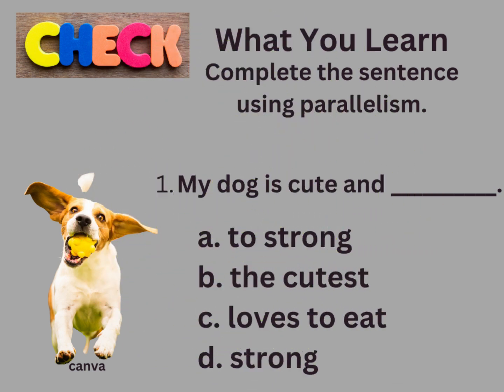Let's check what you learned from today's lesson on parallelism in sentences. Choose the answer that achieves parallelism. A: To strong. B: The cutest. C: Loves to eat. D: Strong.